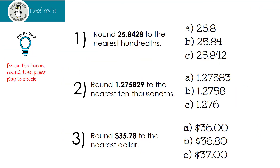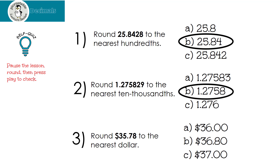All right, this is the self-quiz. You're going to pause the lesson, round, and then press play to check. Let's see how you did. The first one rounded to the nearest hundredths — hopefully you get 25 and 84 hundredths. Number two asks you to round to the nearest ten thousandths. And the last one asks you to round to the nearest dollar — hopefully you get $36.